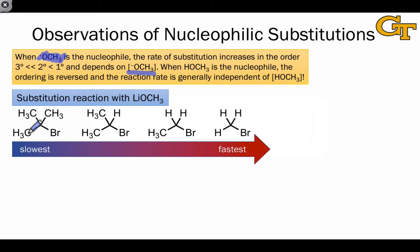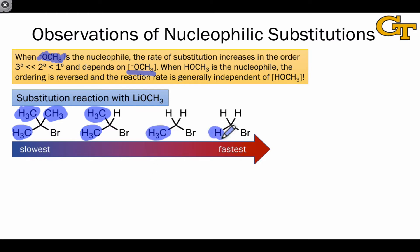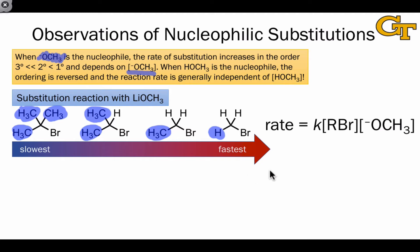Graphically, the slowest reaction — essentially no nucleophilic substitution — occurs when we have three alkyl groups bound to the electrophilic carbon. The rate goes up substantially when we only have two groups there, and the rate is fastest when we have only one group there, or we have a methyl halide. The rate when using this nucleophile depends on both the concentration of the electrophilic molecule and the concentration of the nucleophilic molecule.